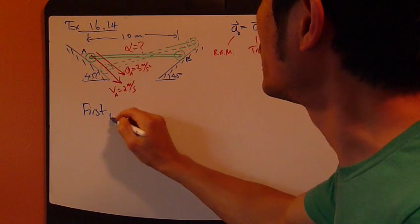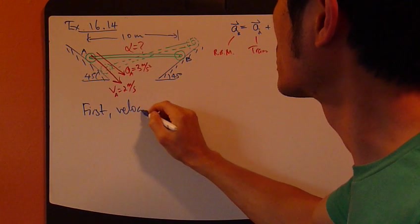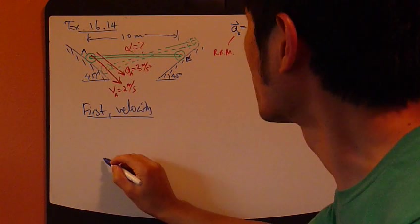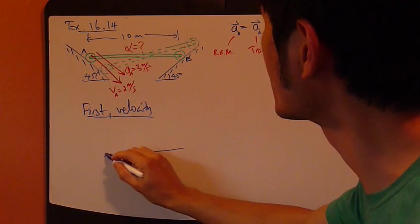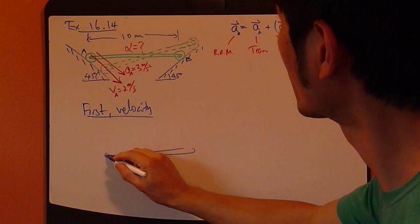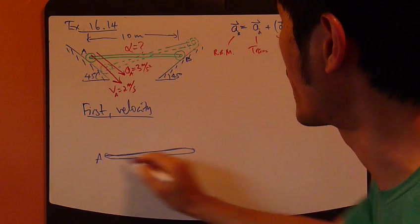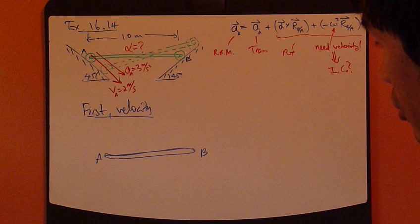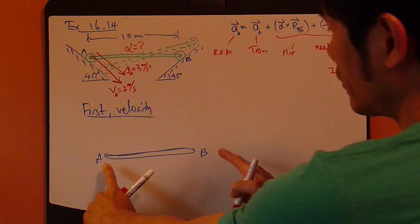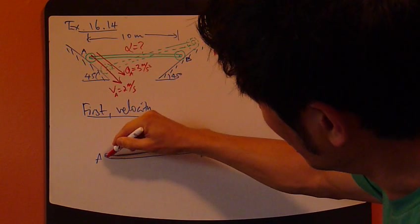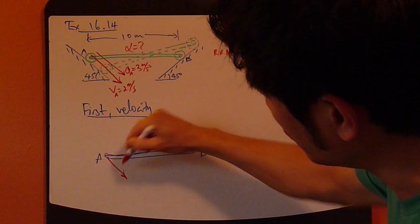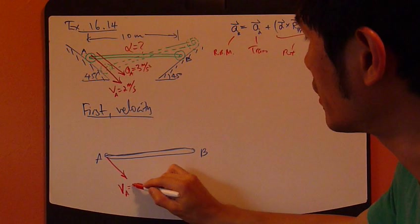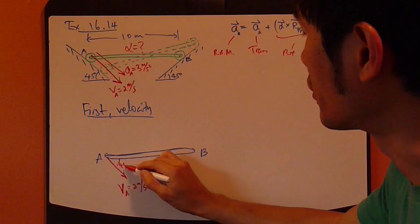So first, velocity. I'm going to draw this body at this instant right here. Horizontal. That's A and B. Next, you draw the velocity. Velocity at H&N. So at point A, velocity is coming down at 45 degree angle. B, A. That's given. That's 2 meter per second. 45 degrees.